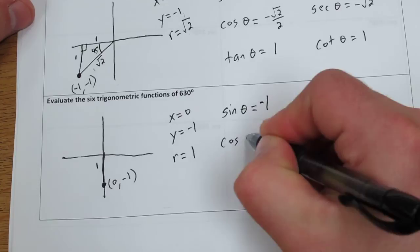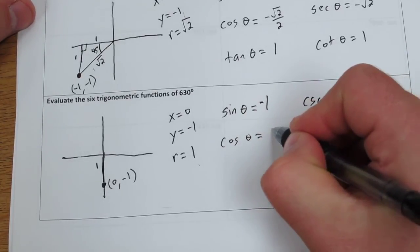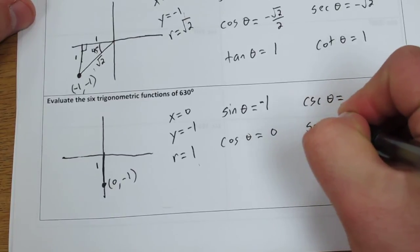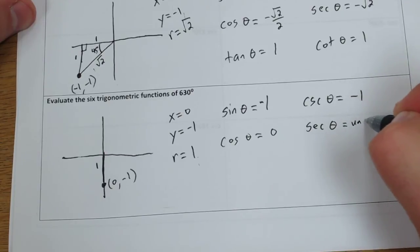Cosine of theta is x over r, so 0 over 1 is 0. But secant is going to be 1 over 0, so secant theta is undefined.